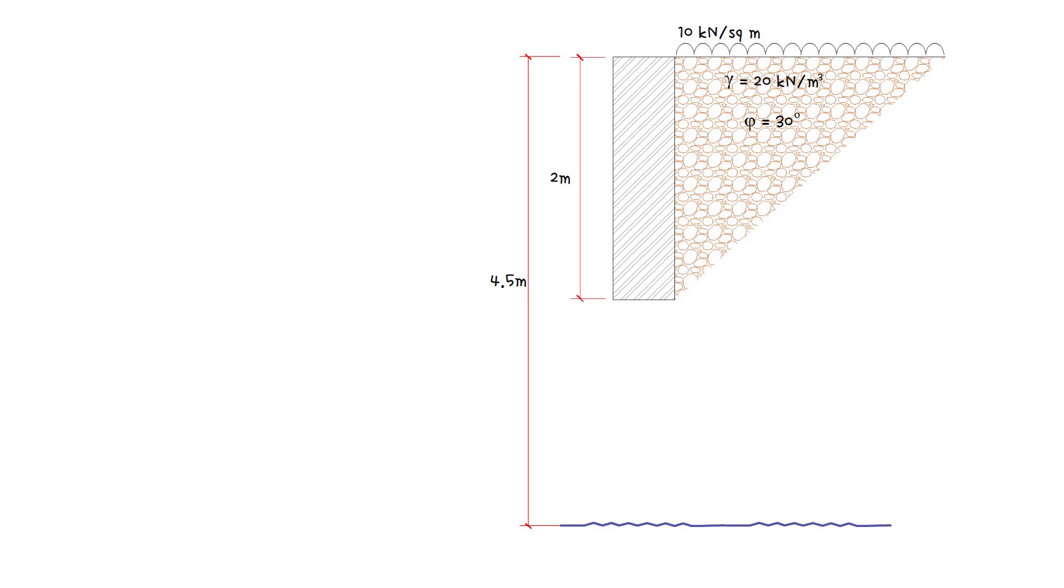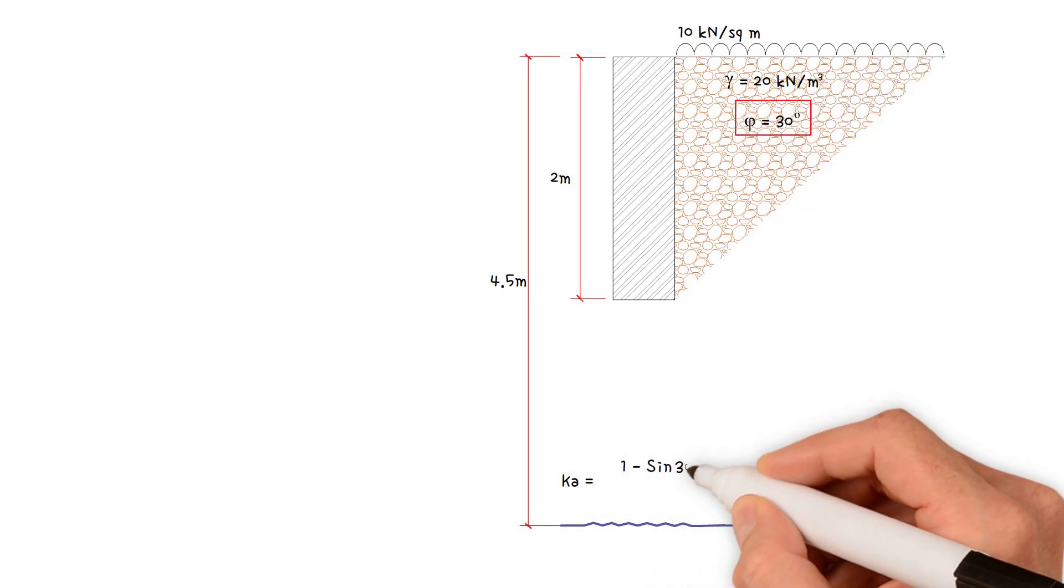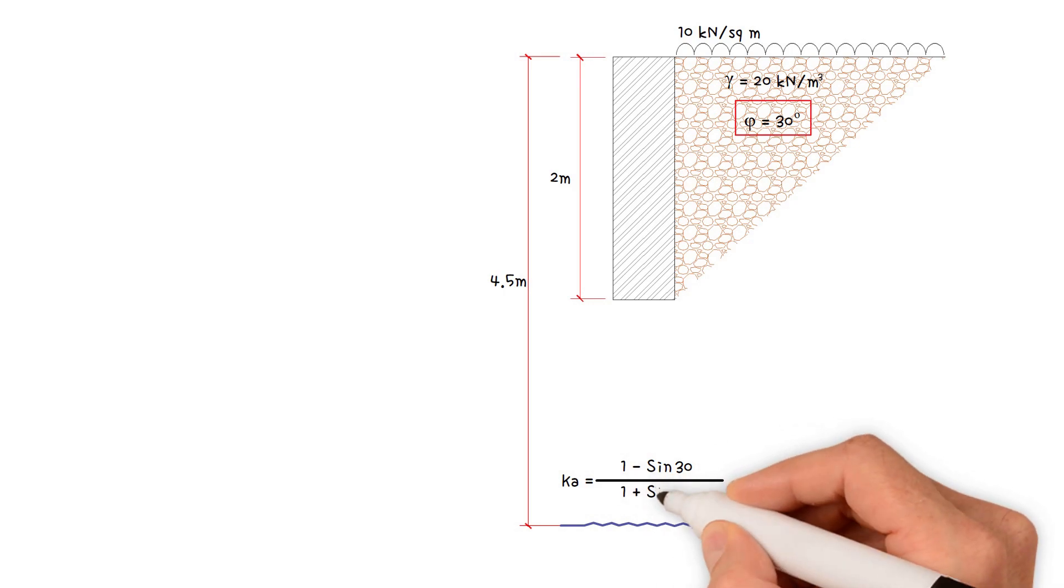First of all, we need to work out the coefficient of active pressure, which equals 1 minus sine of the soil friction angle 30 degrees. This gives us a value of 0.33.